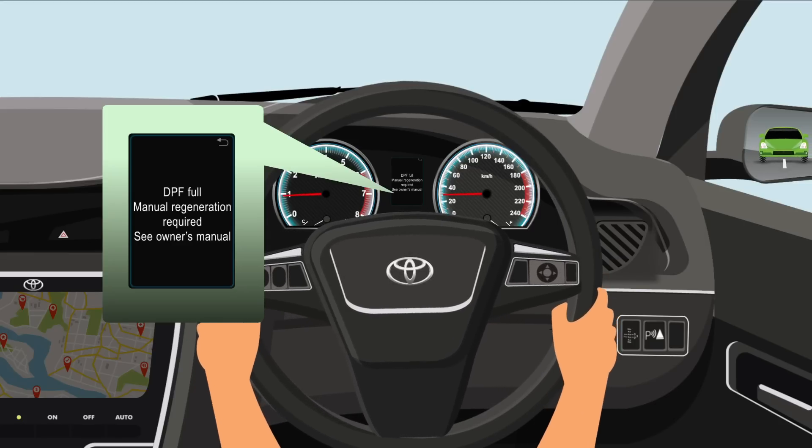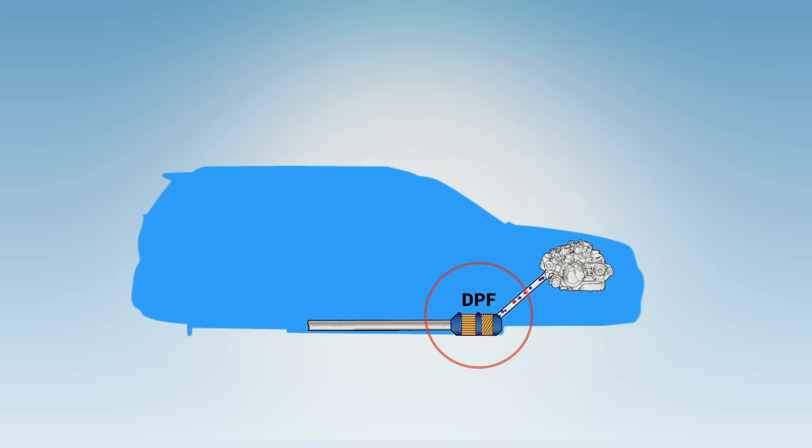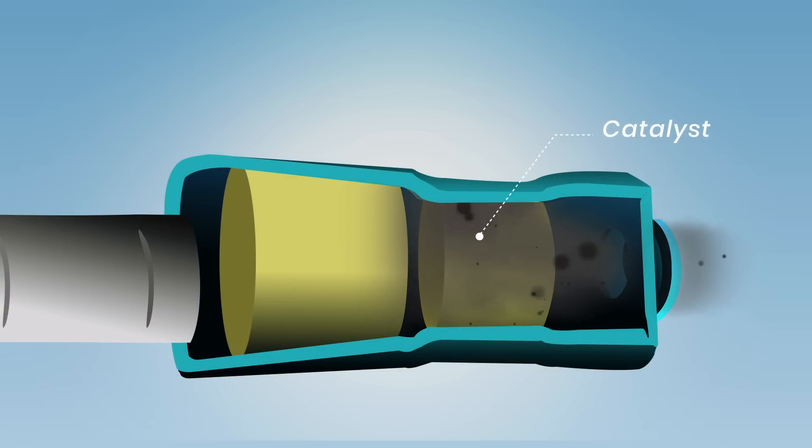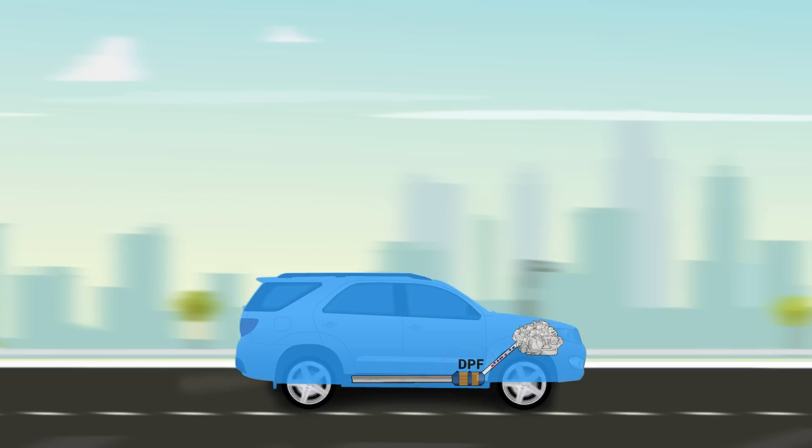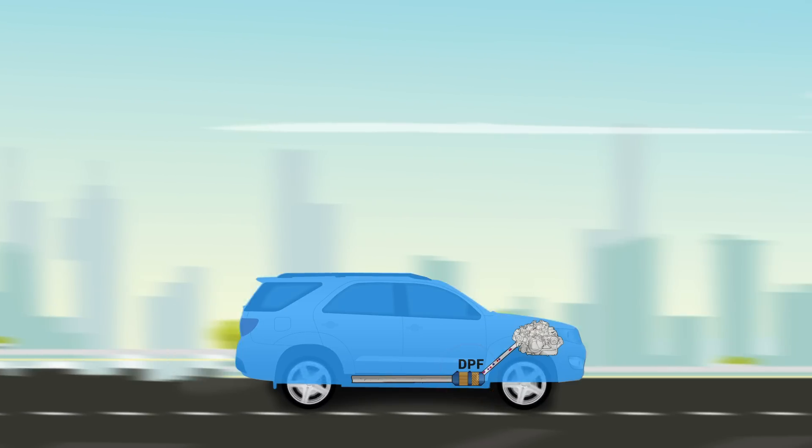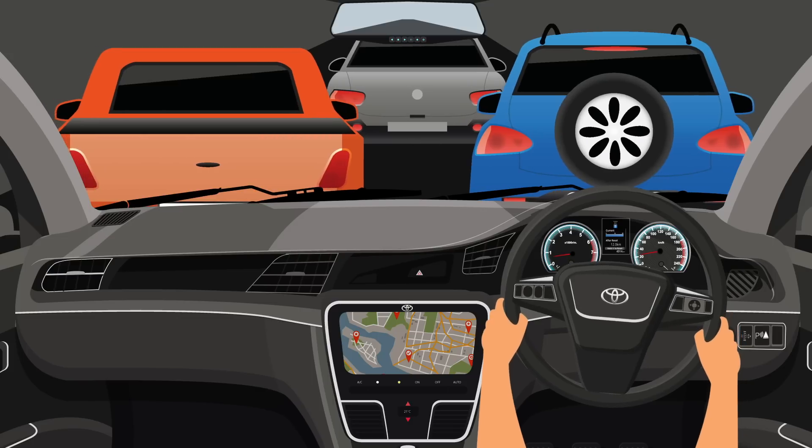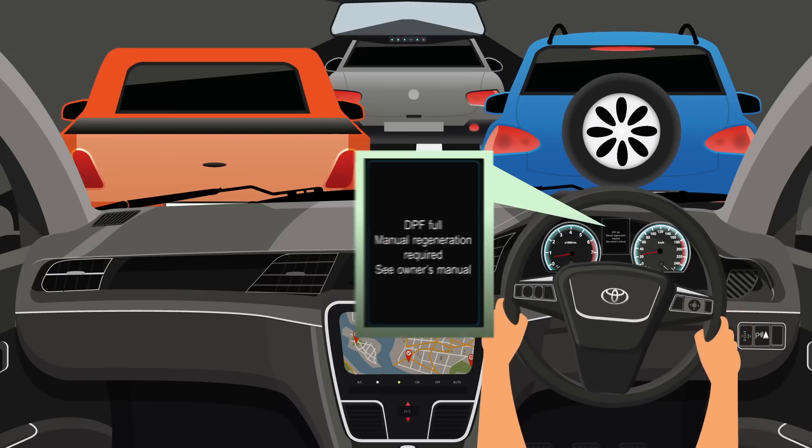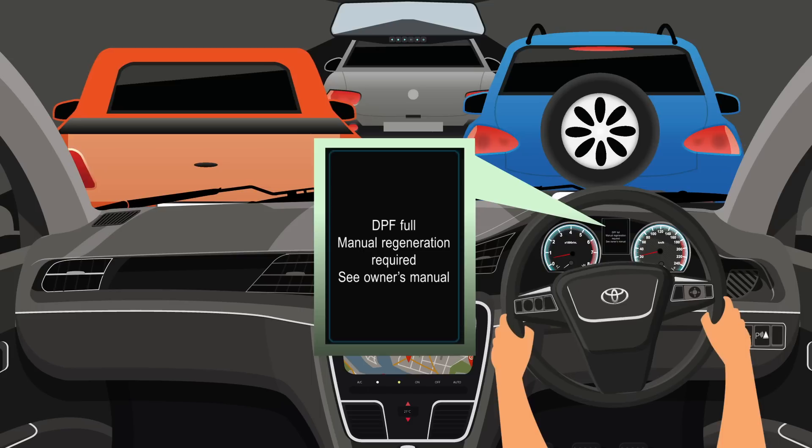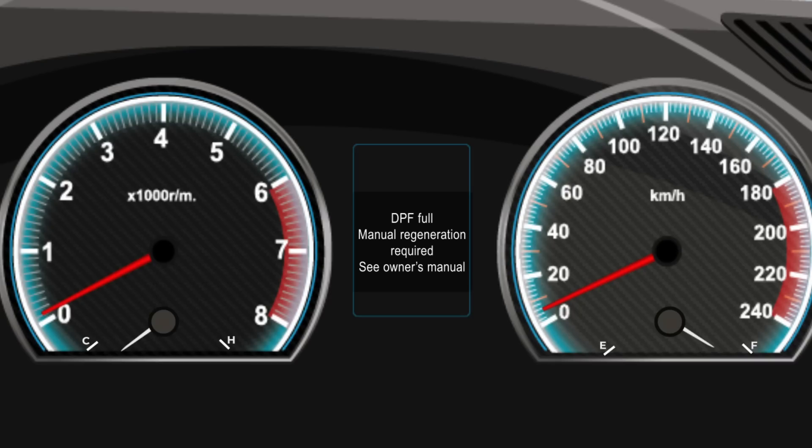These carbon particles accumulate in the diesel particulate filter or DPF system and may need to be flushed out through a regeneration process. Normally when driving on a highway, the regeneration of the diesel particulate filter happens automatically. However, for driving conditions with constant low speed or frequent short trips, the DPF system warning message may be displayed.